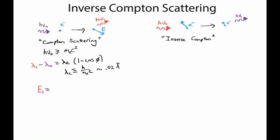If you express that in terms of energies, the energy of the exiting photon E1 equals the energy of the incoming photon E0 over 1 plus E0 over the rest energy of the electron, m_e c squared, times the term that accounts for the exiting angle. In order to have lost a substantial amount of energy, the denominator needs to be significantly larger than 1, which means E0 needs to be significantly larger than m_e c squared. That's the origin of the limit that Compton scattering becomes important when the photon energy is of order the rest mass of the electron.